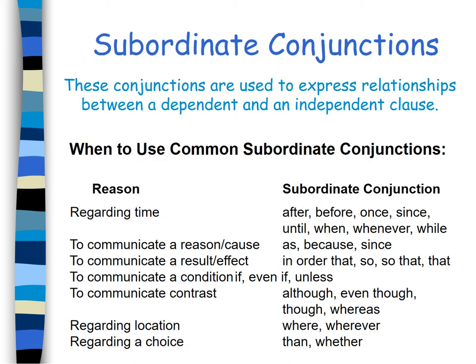Now, let's move to subordinate conjunctions. These conjunctions are used to express relationships between independent and dependent clauses. When to use common subordinate conjunctions: regarding time, you can easily use after, before, once, since, until, when, whenever, while.